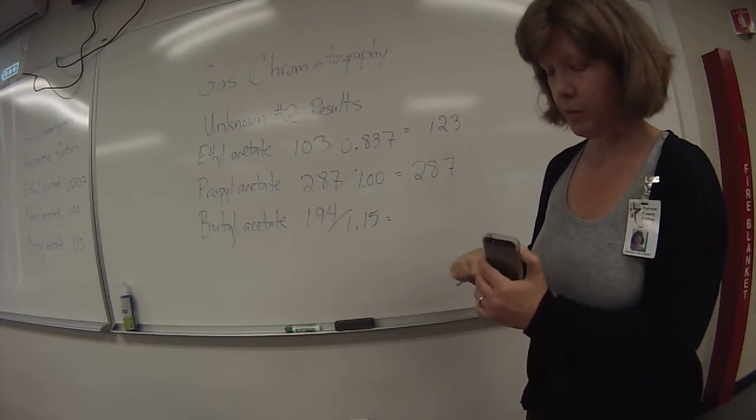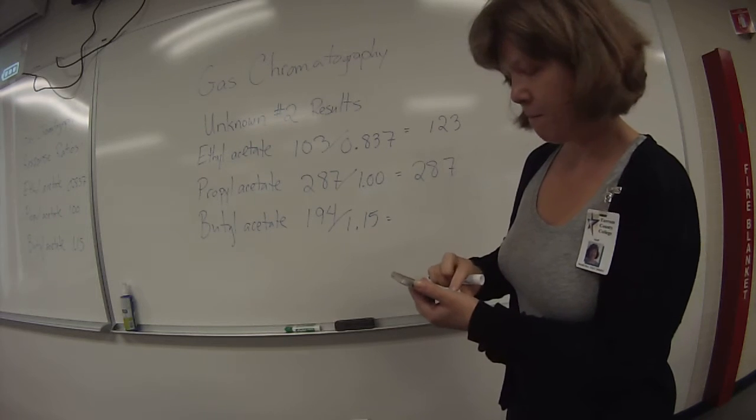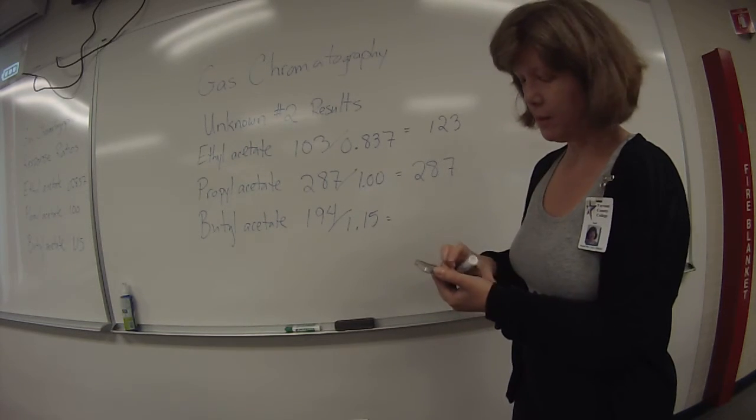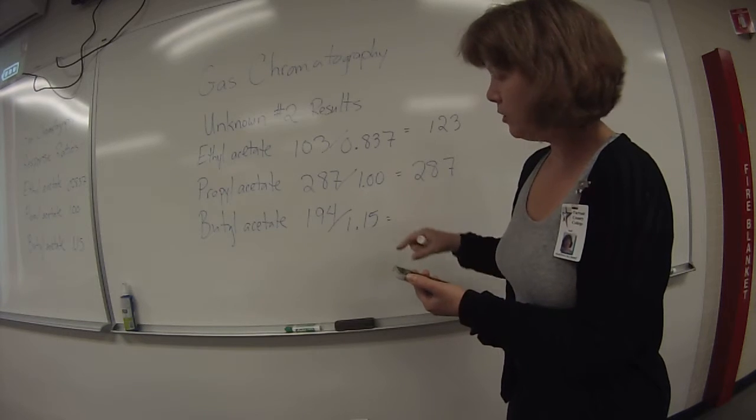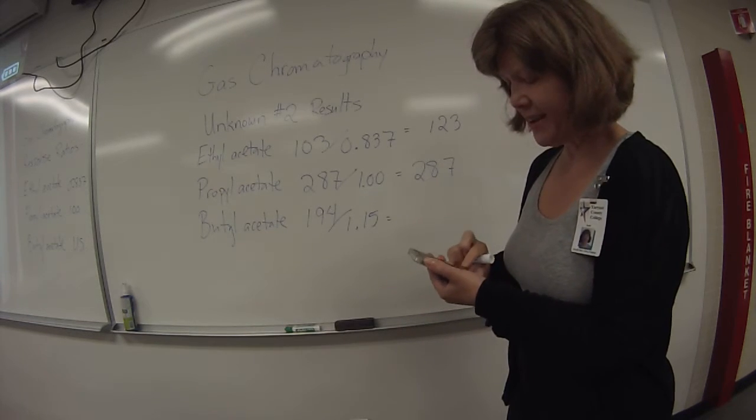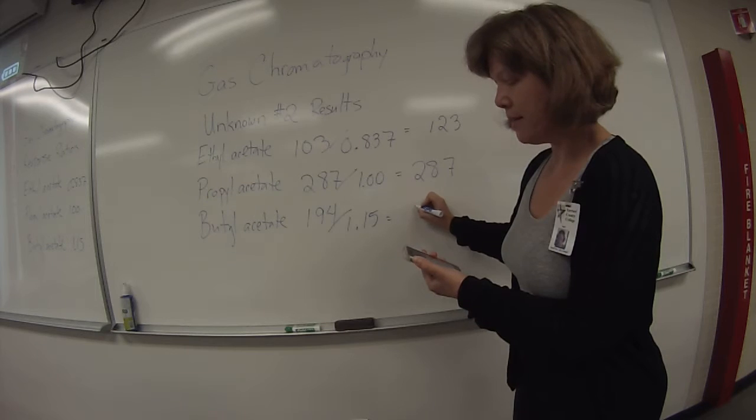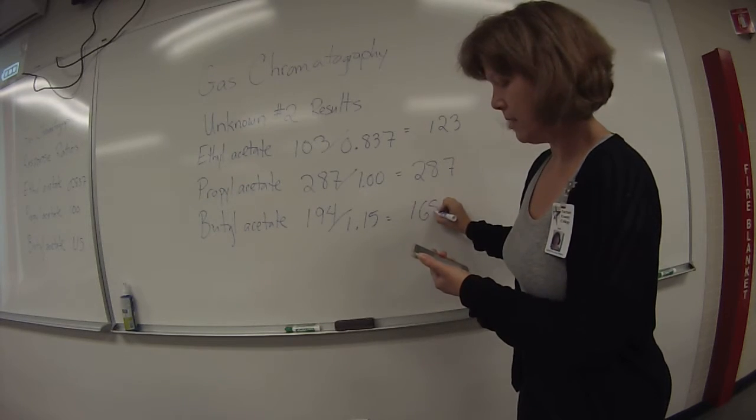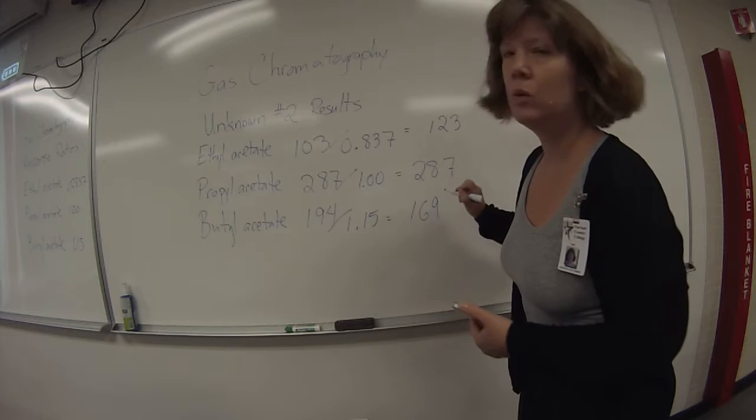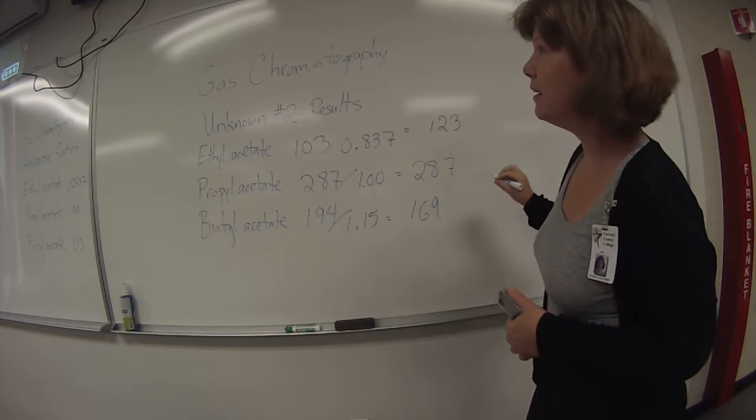Butyl acetate's response ratio is 1.15. To figure out butyl acetate's corrected area, you have 194, which is the area the computer will read, divided by 1.15. The corrected area then is 169.